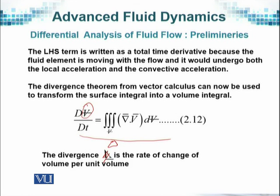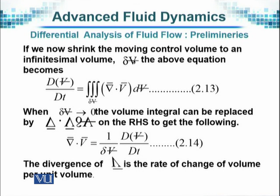The divergence is the rate of change of volume per unit volume. If we now shrink the moving control volume to an infinitesimal volume, then δV, a small change in the volume in the above equation, will reduce to this. And when δV tends to 0, the volume integral can be replaced.